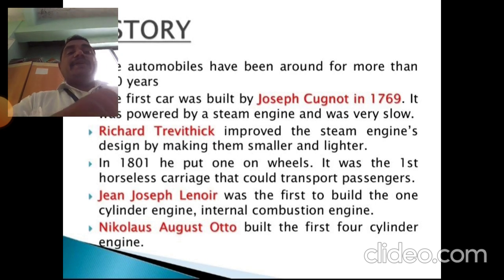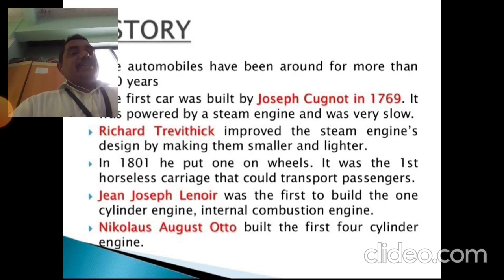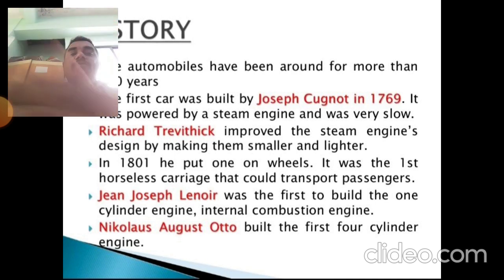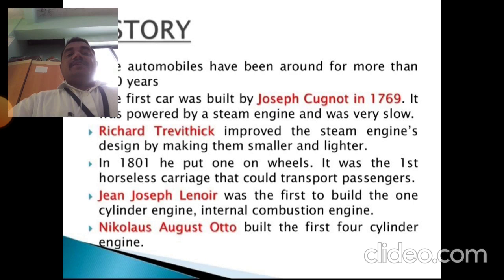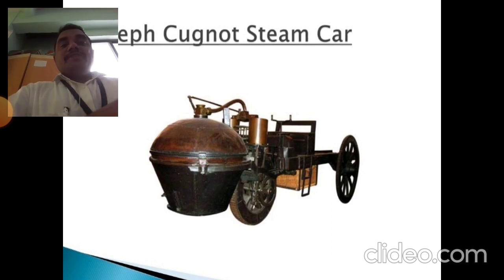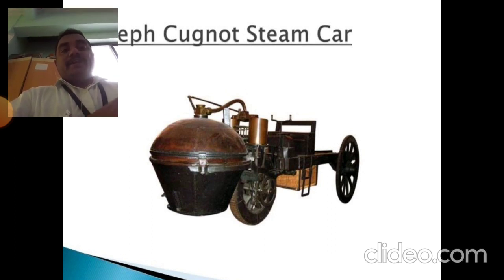Nicholas August Otto was the first to build a four-cylinder engine. He developed the four-stroke internal combustion engine — the Otto cycle — which became the foundation for modern engines. Before him, the vehicle was powered by a steam engine, as in Joseph Cugnot's design.